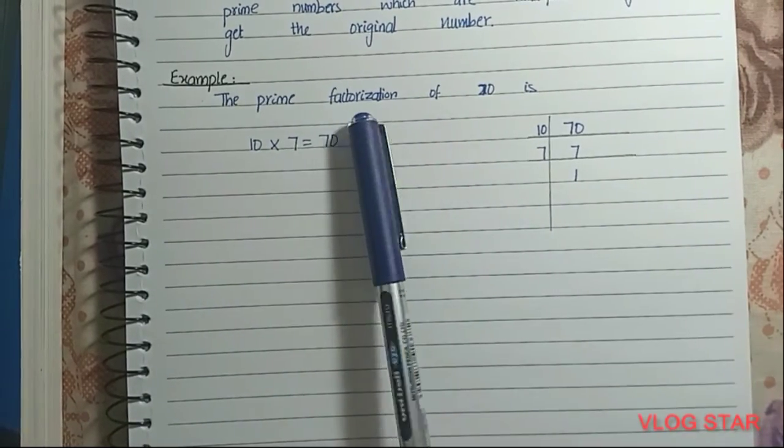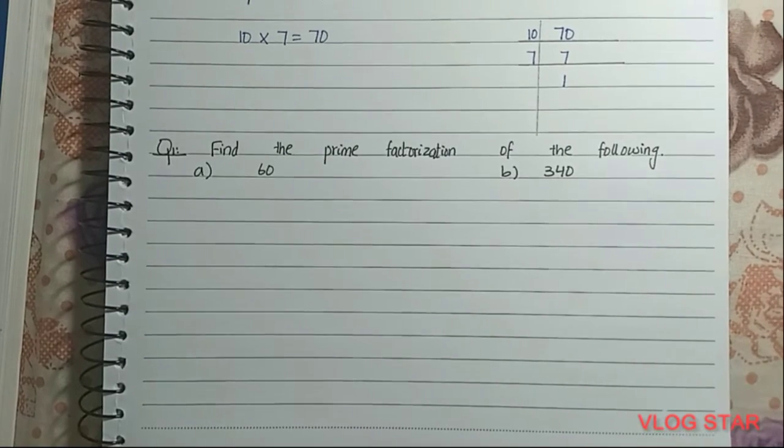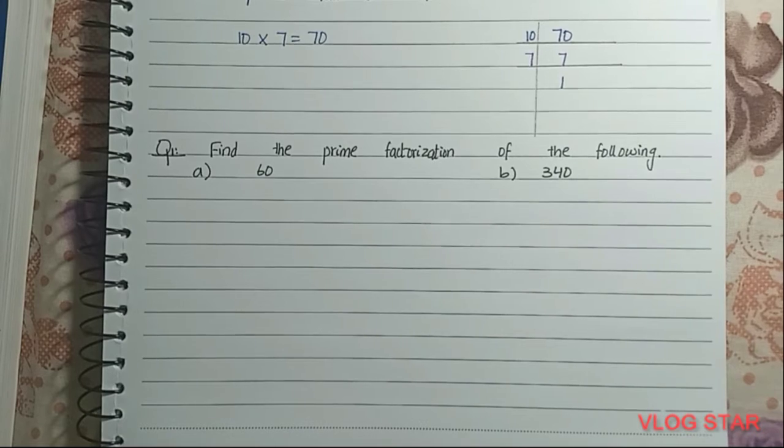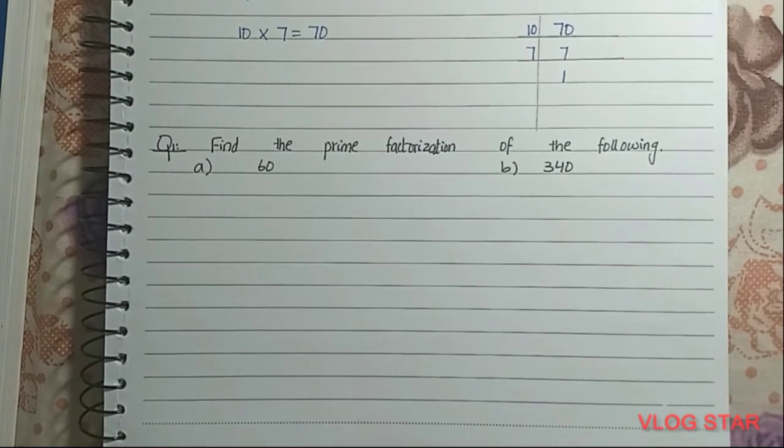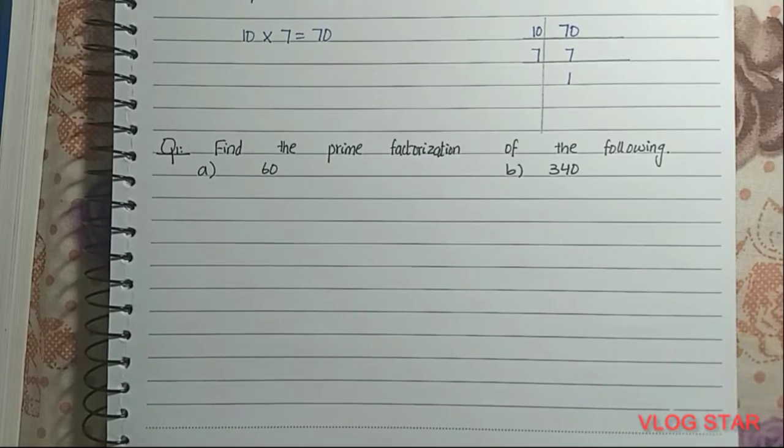This is the index notation form, and the question is solved. Your question is: Find the prime factorization of the following: a) 60 and b) 340. Pause the video and comment your answer below.